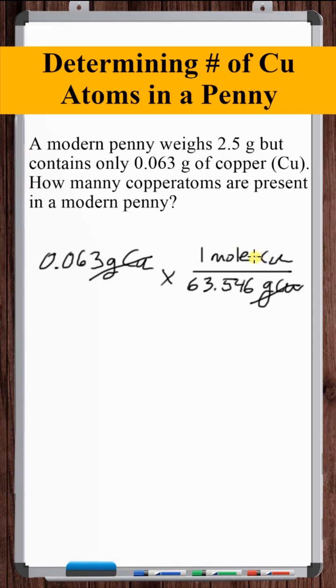Okay, but we want to know how many copper atoms are present. So how do we convert from moles of copper to atoms of copper? We'll use Avogadro's number. One mole of copper, the moles cancel, is equal to 6.022 times 10 to the 23rd atoms of copper.